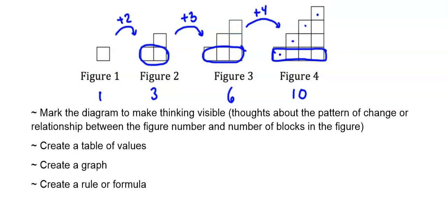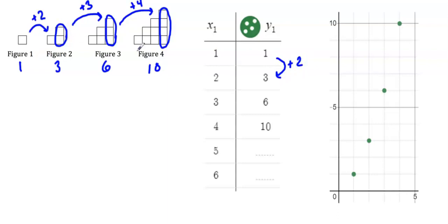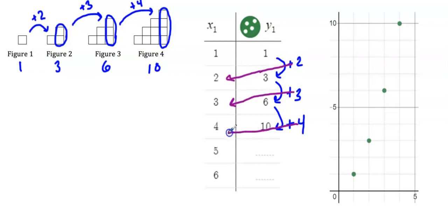Let's take a look at the table of values and a graph. I used Desmos to help get this organized. There was one block, then three, then six, and then ten. I marked my diagram so it's adding up that last column every time. Looking at this pattern, I can see it is not linear — I'm adding two, then three, then four. The amount I'm adding is the same as the value of x, so each time I'm adding x.